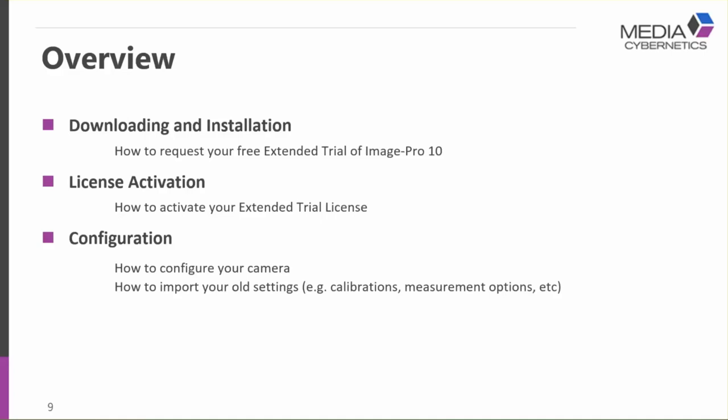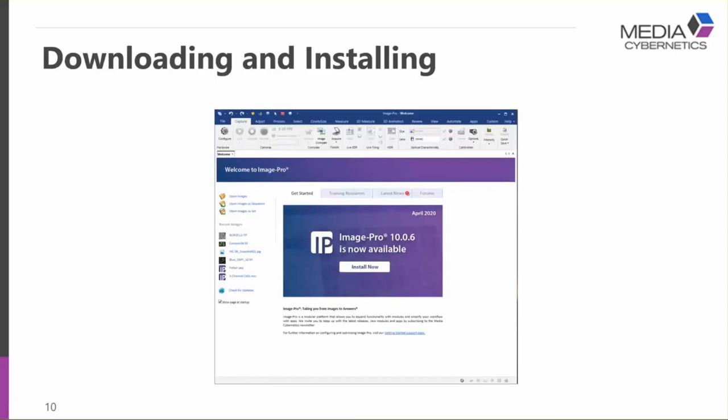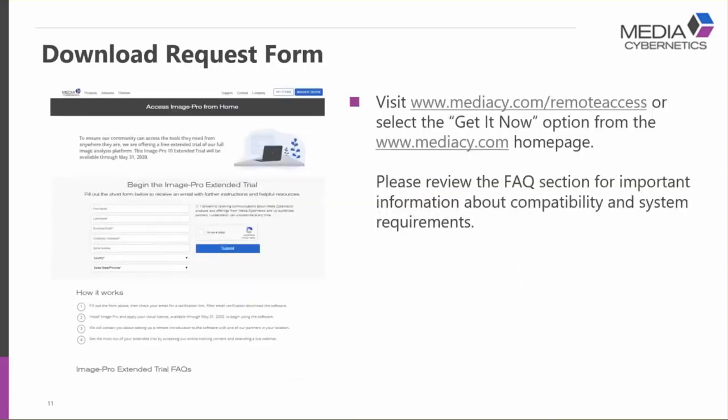My name is Scott Reed, manager of technical services at Media Cybernetics. Today I'll be covering how to get your copy of the extended trial of Image Pro 10, how to activate the license, and how to configure it if you intend to use a camera or need to import old settings from an existing installation. The very first thing you want to do is go to our website — mediasci.com/remote-access — or use the large 'Get It Now' option on our home page. Both take you to the same location.